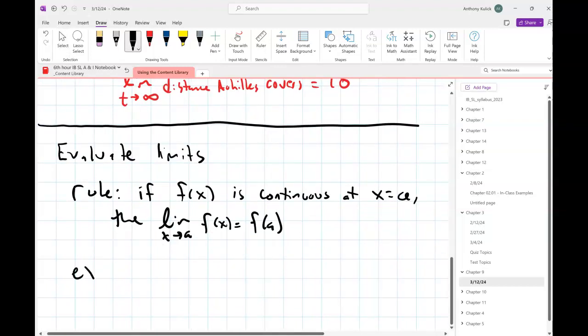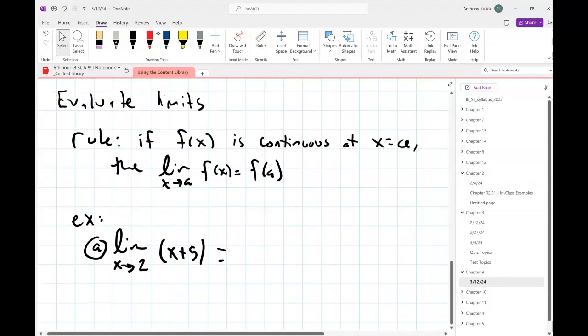So for example, if we look at the limit as x approaches 2 of x plus 5, and we want to evaluate that, we have to first ask ourselves, what does the graph of x plus 5 look like? Well, it's a straight line. What's the domain for x plus 5? All real numbers, right? So it has no open circles, no jump discontinuities, no vertical asymptotes. It's continuous at all values of x. Agreed?